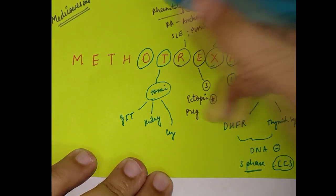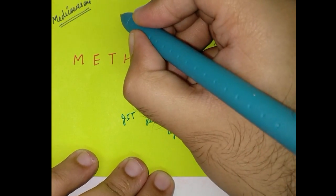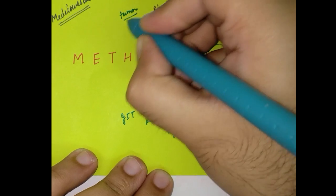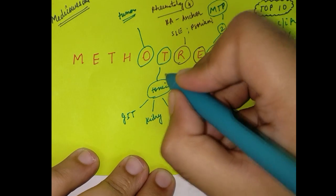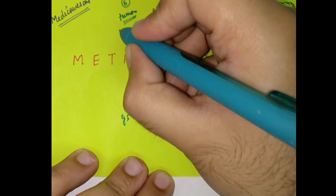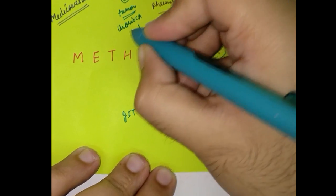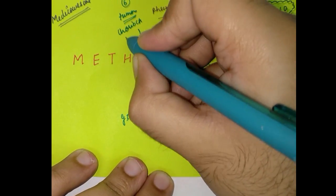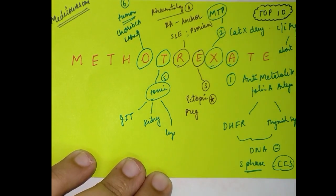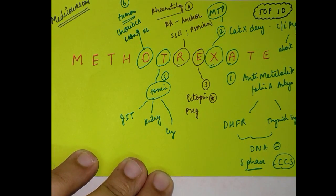The 'O' stands for other uses, which mainly include tumors and neoplasms. It's used for tumors like choriocarcinoma, carcinoma of the breast, and Hodgkin's lymphoma, among others.